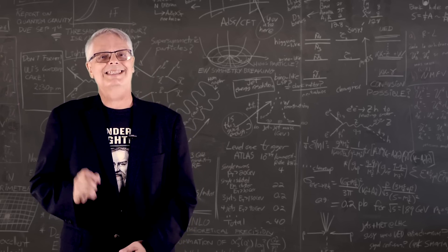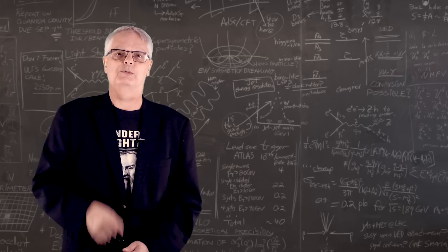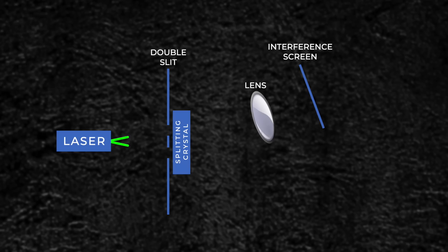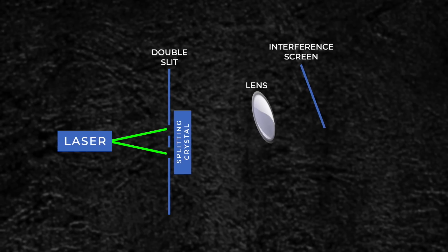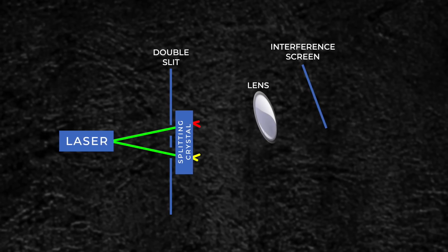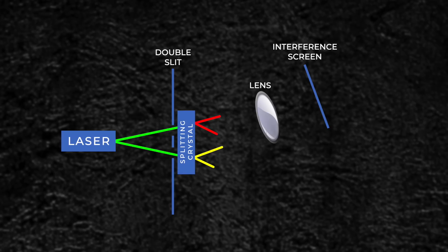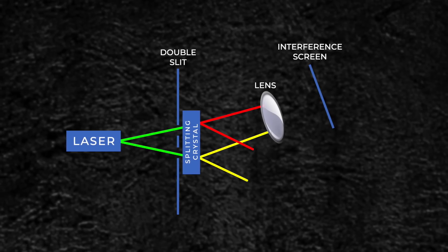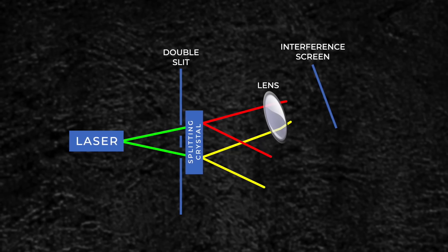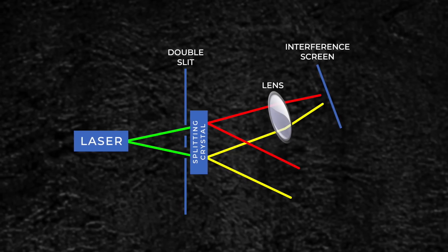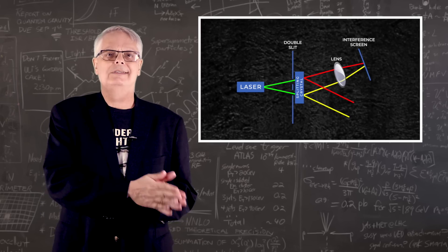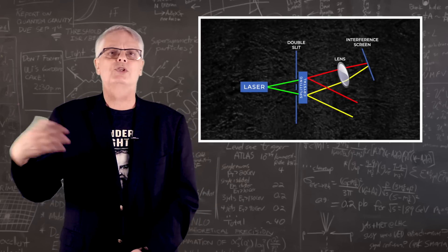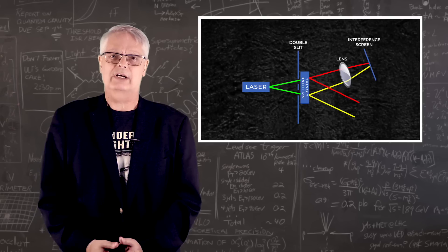But let's make some changes to the single photon hitting two slits experiment. They're going to blow your mind, I promise. Let's add a crystal to the experiment, which turns the incoming photon into two photons, each with half the energy of the first one. These two photons are what we call entangled, which means that if you measure one, you know everything about the other one. The fact that one is yellow and one is red isn't real. They're actually the same color, but I used the two colors to clarify what I'm talking about.